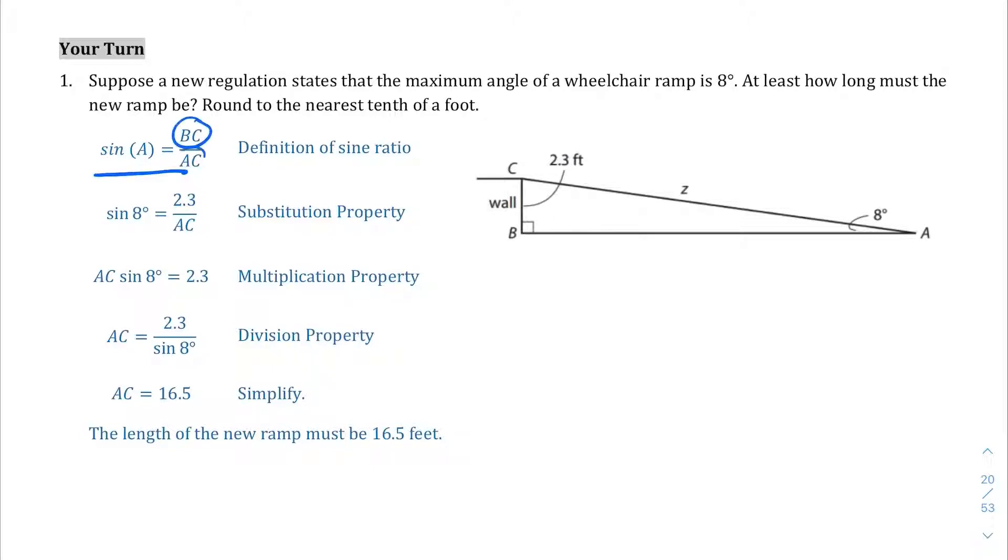Sine is going to be the opposite over the hypotenuse, which if we're looking at the sine of A, it's the opposite wall, which is BC, over the hypotenuse, which is AC, right, which they have the correct set up there.